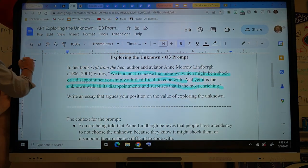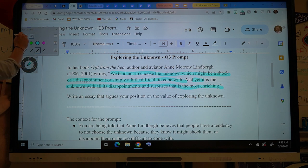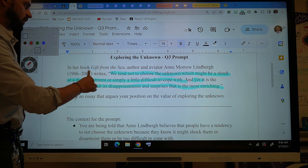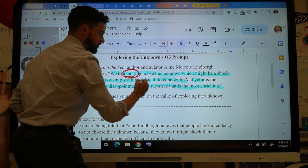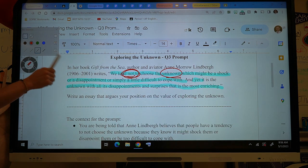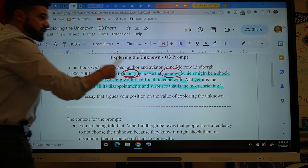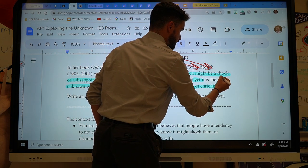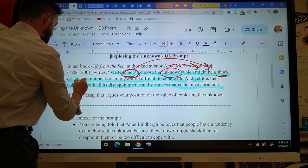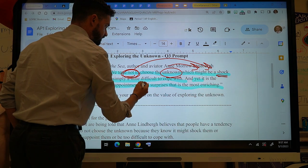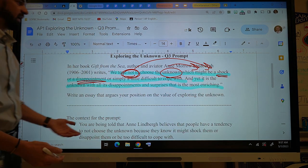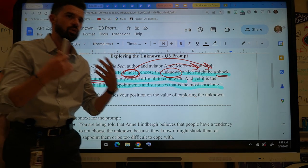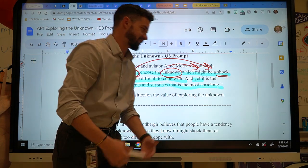And so when you look at that and this is what it basically boils down to, we see something that's negative, right? We tend not to choose the unknown. So that's good to know, which might be a shock or a disappointment or simply, and that's the reason if we don't do this because why? Well, which might be a shock or a disappointment or simply a little difficult to cope with. That's why people avoid the unknown, right? Cause the unknown is scary because you have a thing called imposter syndrome.